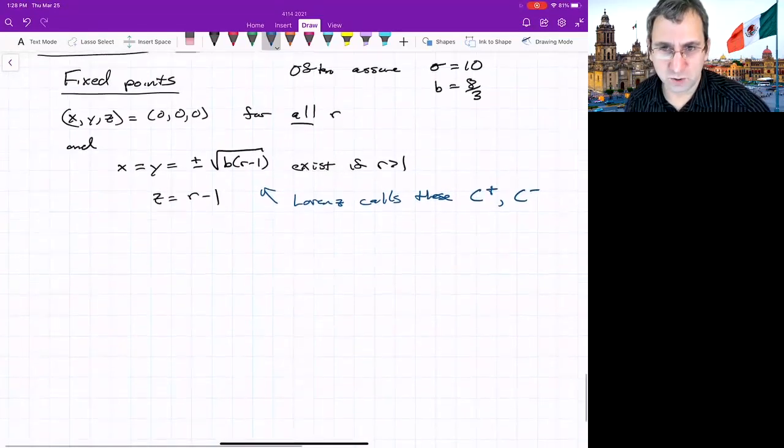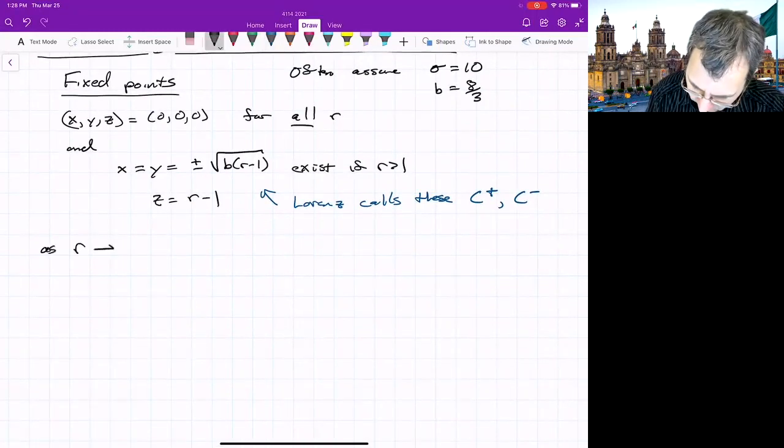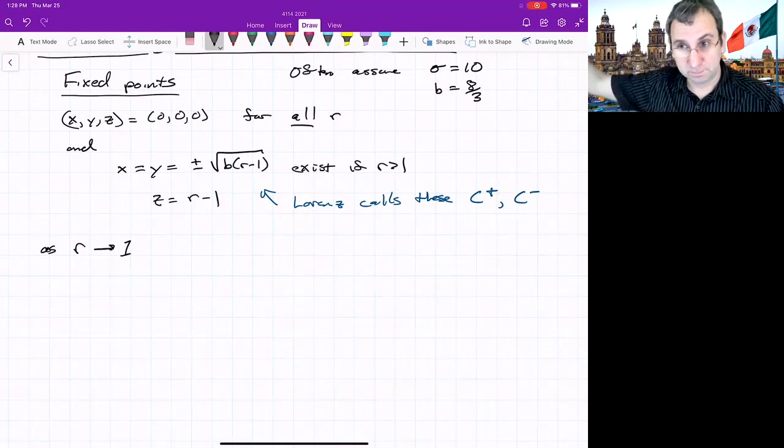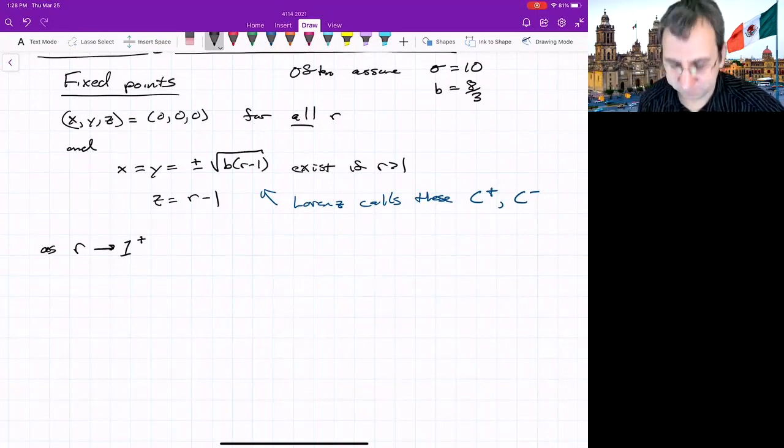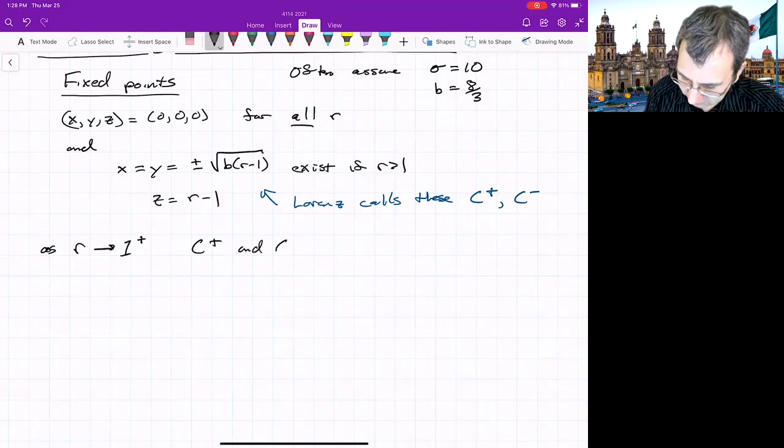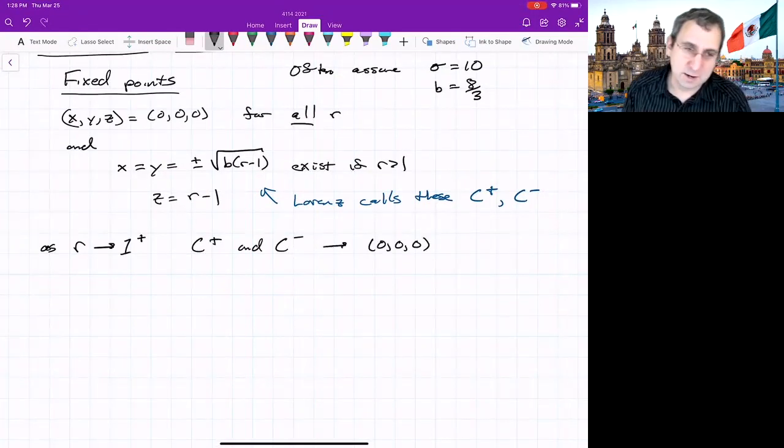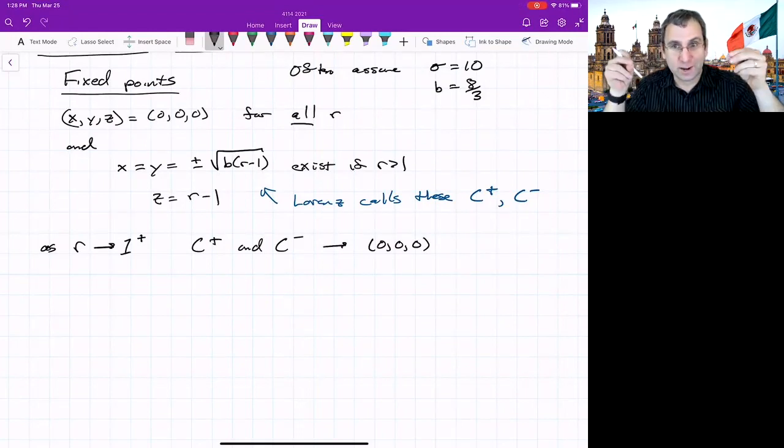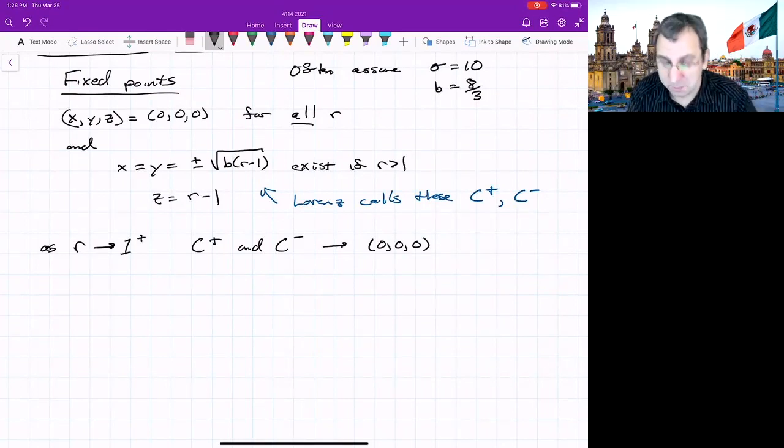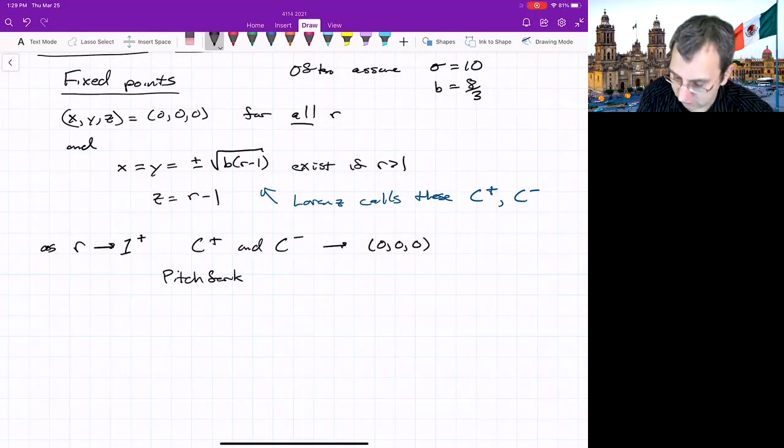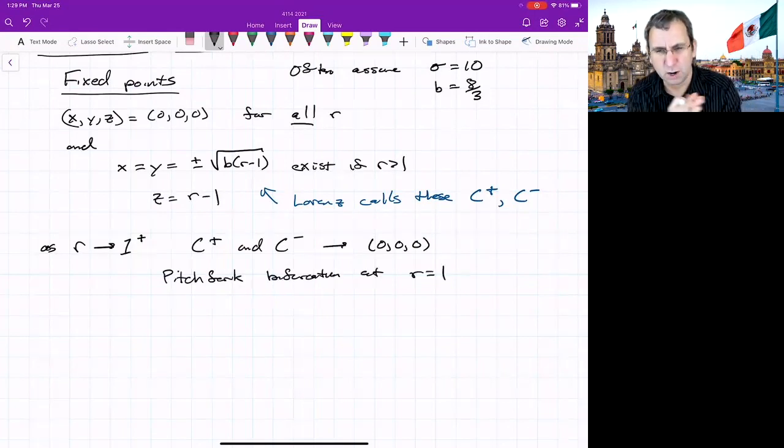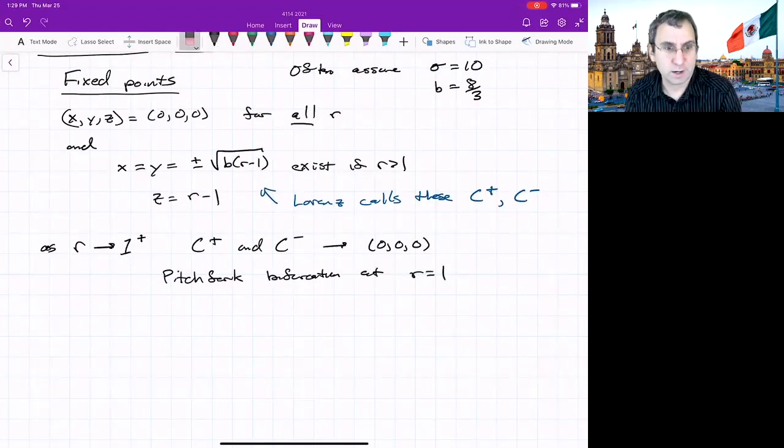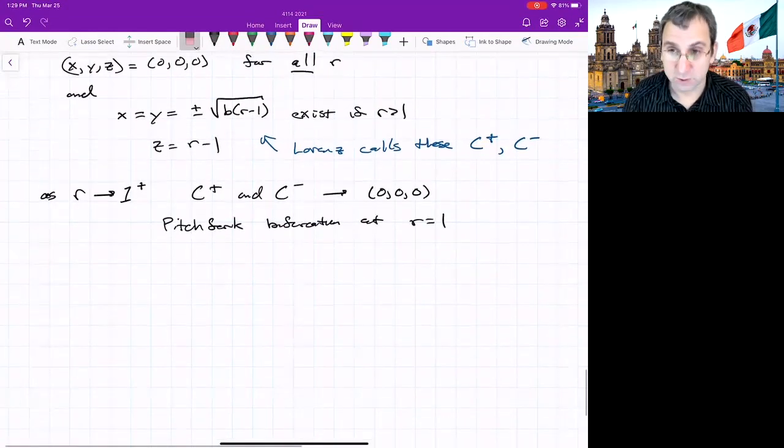What you'll notice is that if we think of R going to 1 from the positive side, so from large values of R down to 1, C plus and C minus coalesce with the origin. In fact, we have a pitchfork bifurcation at R equals 1. If you have two kind of symmetric pairs of fixed points and they merge with something, it seems like a pitchfork bifurcation. And you could show that it really is. As we're increasing R from 0, R has to be greater than or equal to 0. As we increase from 0, then out of the origin there come two points. We don't know stability yet, so we should look at the local stability of the origin.